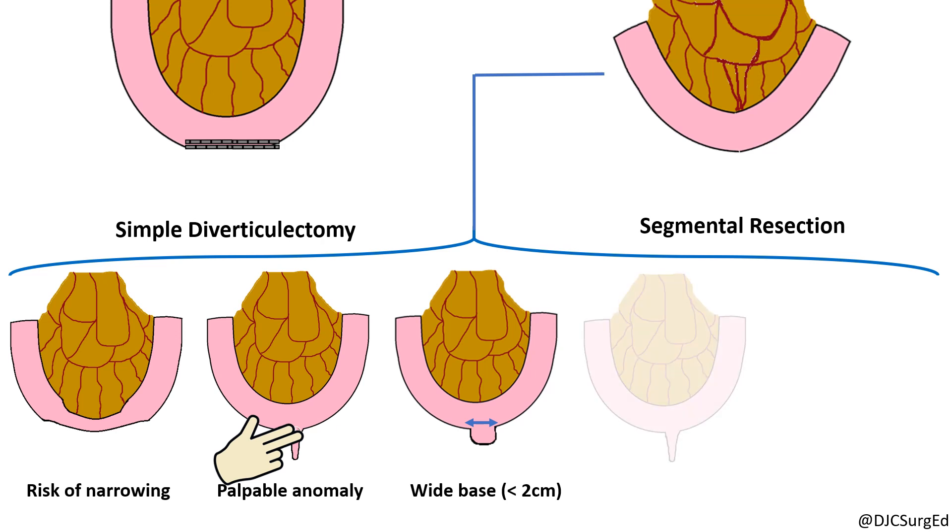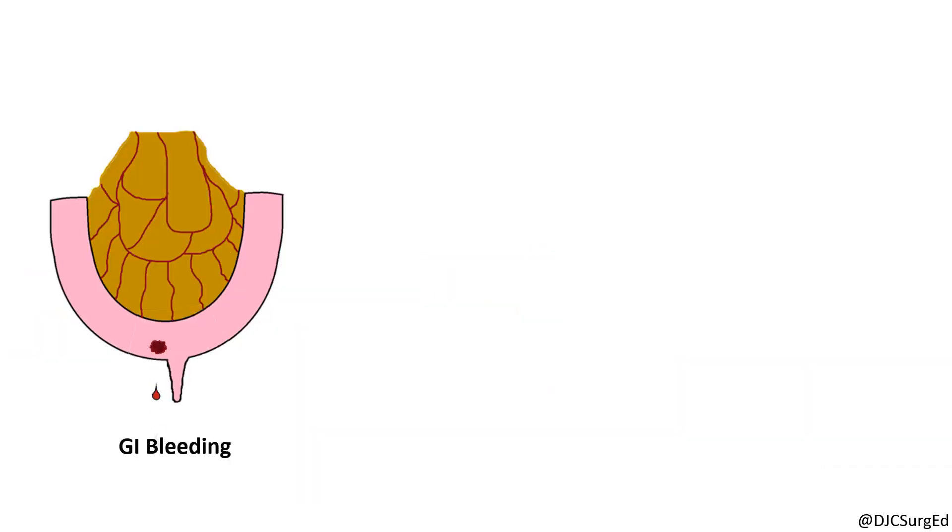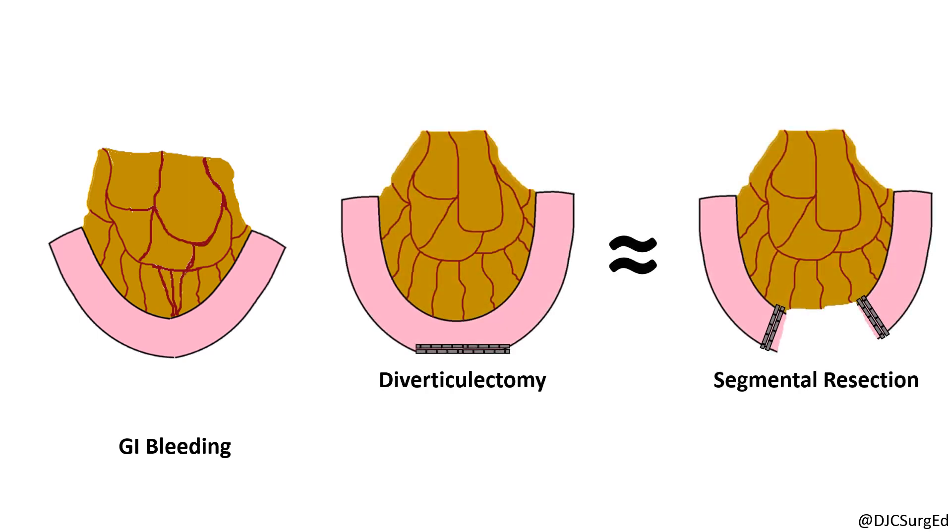Segmental resection is also indicated for neoplasms or for ischemic or injured bowel due to obstruction or inflammation. When GI bleeding is the primary clinical manifestation, segmental resection removes the gastric mucosa within the diverticulum as well as the mucosal ulceration located in the adjacent small bowel. However, there is no definitive data demonstrating superiority of segmental resection over diverticulectomy, and it's likely that both are effective surgical approaches.